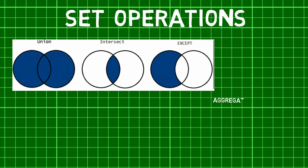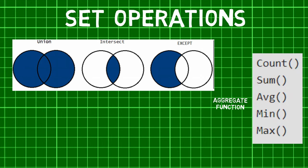An aggregate function is a function where the values of multiple rows are grouped together as input on certain criteria to form a single value of more significant meaning. A few examples of aggregate functions are COUNT, SUM, AVERAGE, MINIMUM, MAXIMUM, etc.